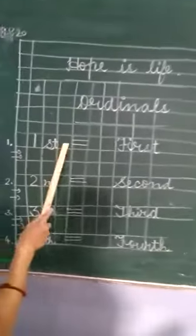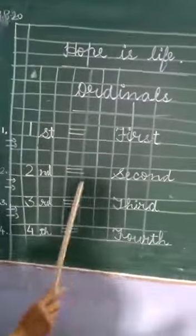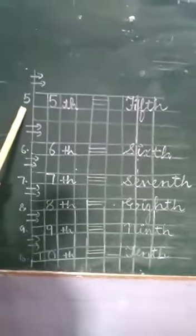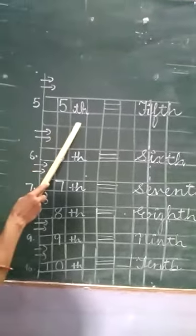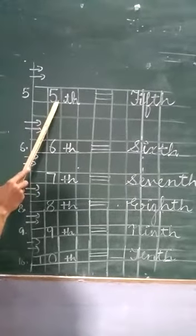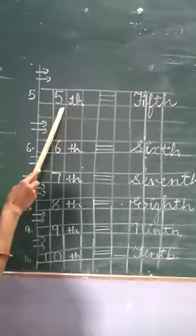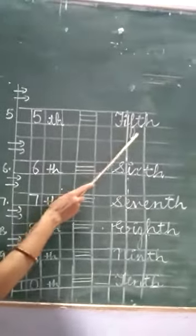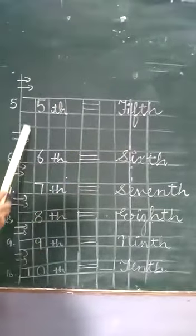Leave one block here, two block here, then you write number 5. This is cardinal number. And the ordinal number of this is fifth. How to write fifth? We write 5 and TH. It becomes fifth. The spelling of fifth is F-I-F-T-H. Again you leave two lines.